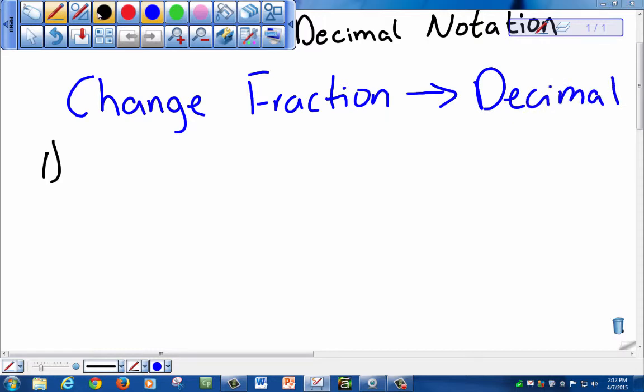For example, let's say we have 3 divided by 5. We want to change this fraction to a decimal. You would have to divide the numerator, the number on the top, by the denominator, the number on the bottom.